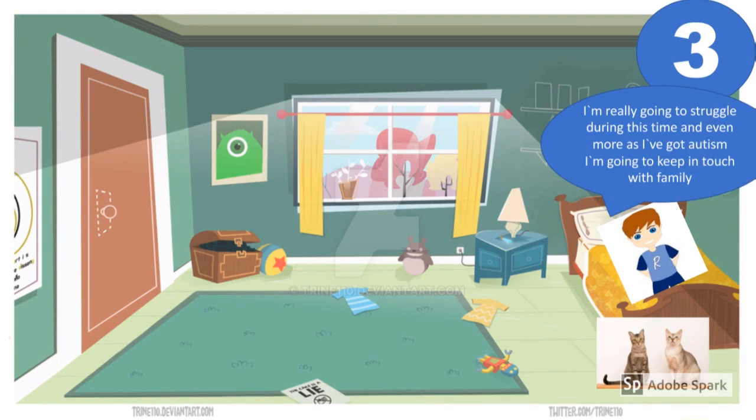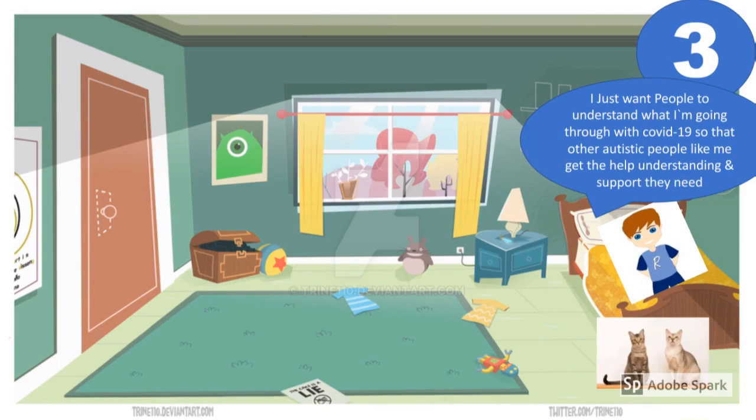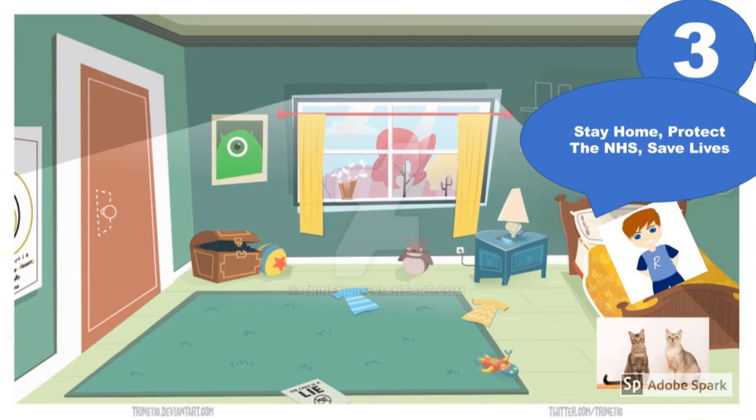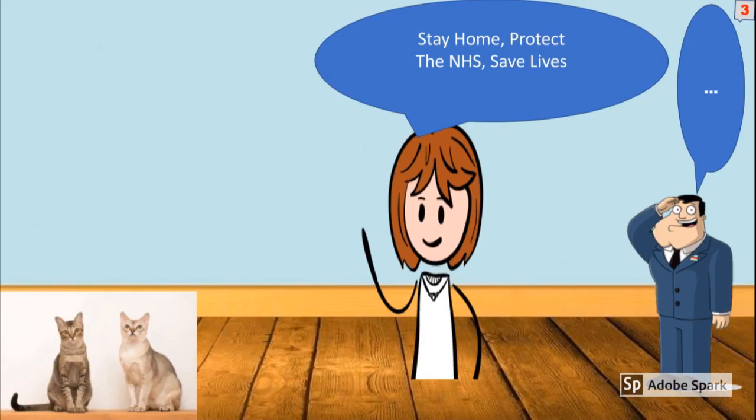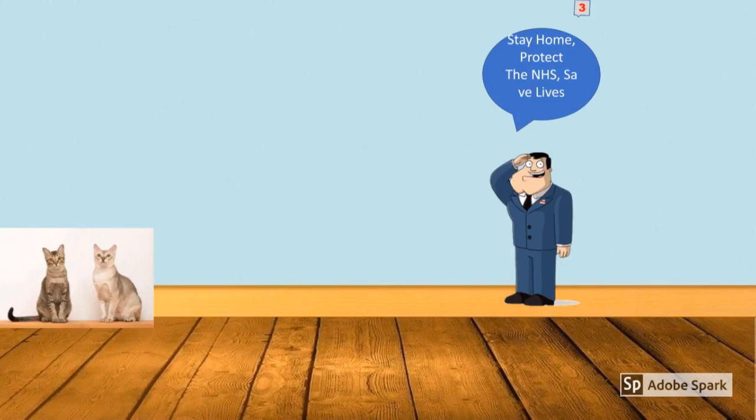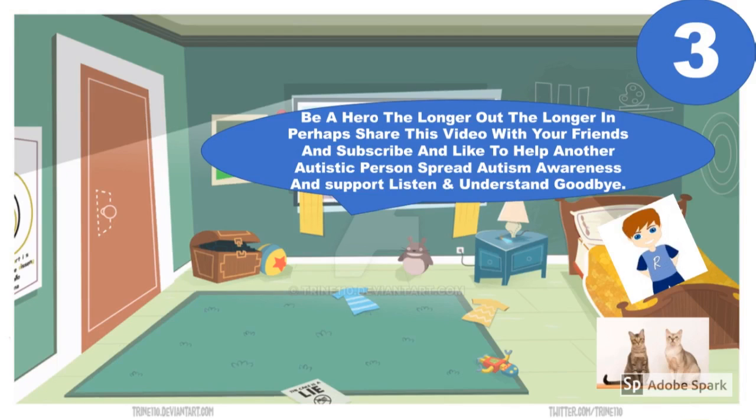I'm really going to struggle during this time and even more as I've got autism. I'm going to keep in touch with family. I just want people to understand what I'm going through with COVID-19 so that other autistic people like me get the help understanding and support they need. Stay home, protect the NHS, save lives. Be a hero. The longer you stay home, the shorter the lockdown. Perhaps share this video with your friends and subscribe and like to help another autistic person spread autism awareness and support.